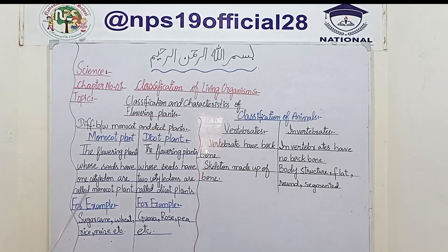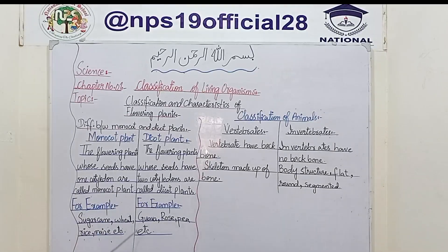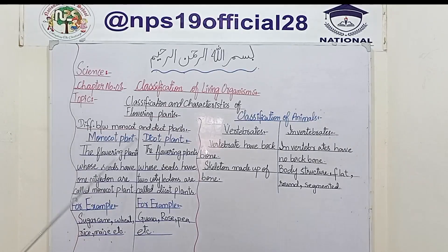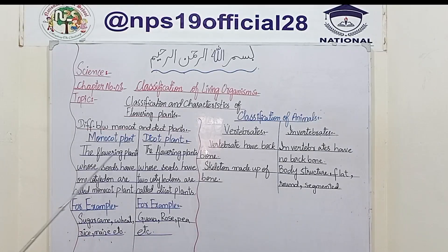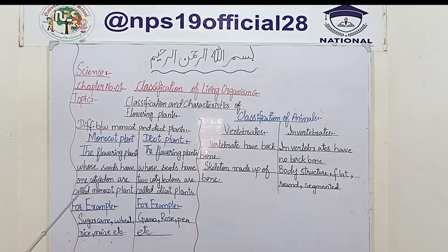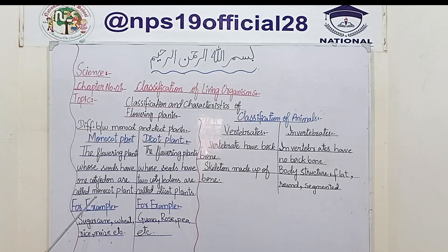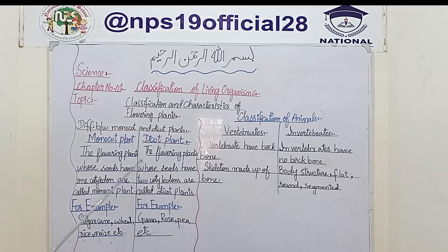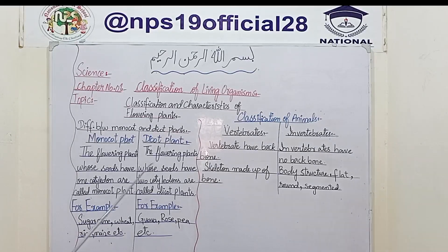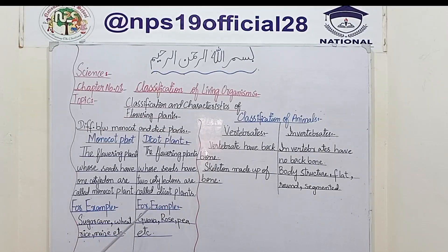Now we have to learn the difference — mainly, what are monocot plants and dicot plants? Monocot plants are the flowering plants which have only one cotyledon seed. We call them monocot plants. Dicot plants are the flowering plants whose seeds have two cotyledons; they are called dicot plants.